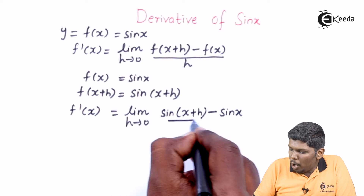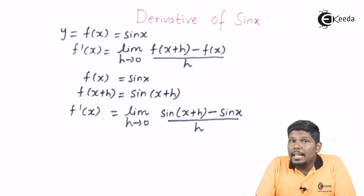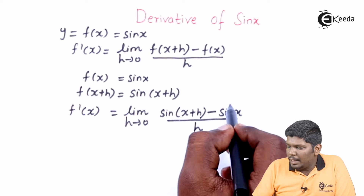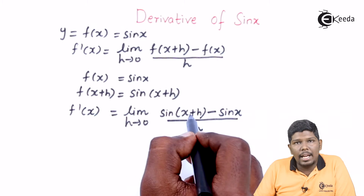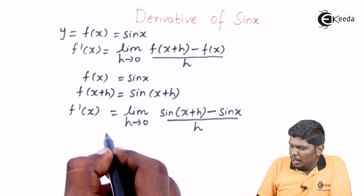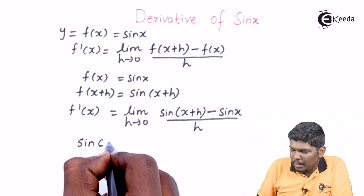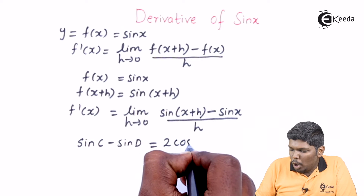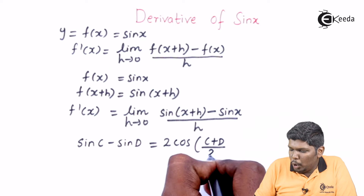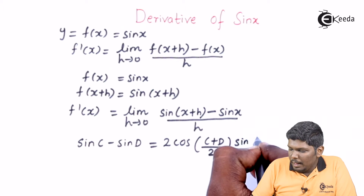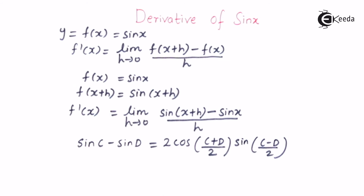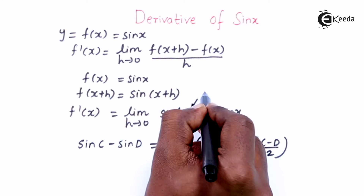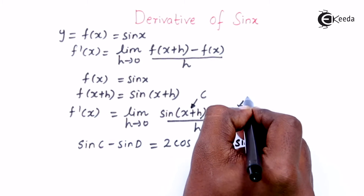In the numerator we have sine C minus sine D. The formula for sine C minus sine D is equal to 2 cos of C plus D upon 2, into sine C minus D upon 2. Here C is X plus H and D is X.